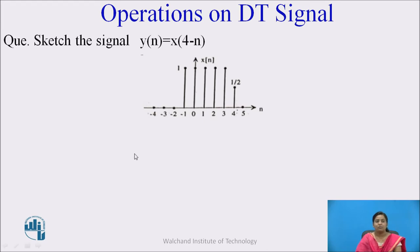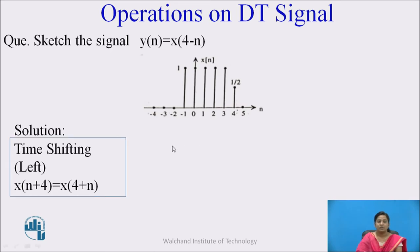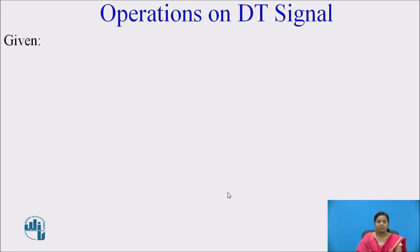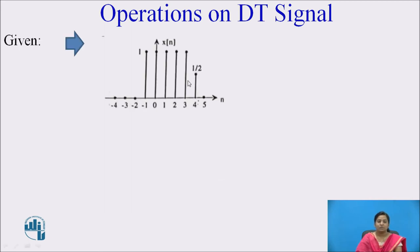Let us see one example: sketch the signal y(n) = x(4 - n), where x(n) is given. The first step is to apply time shifting. To obtain x(n + 4), we shift the signal towards the left side. This gives x(4 + n). But we require x(4 - n), so in the second step we perform the time reversing operation, which directly gives us x(4 - n). Let us see these steps one by one.